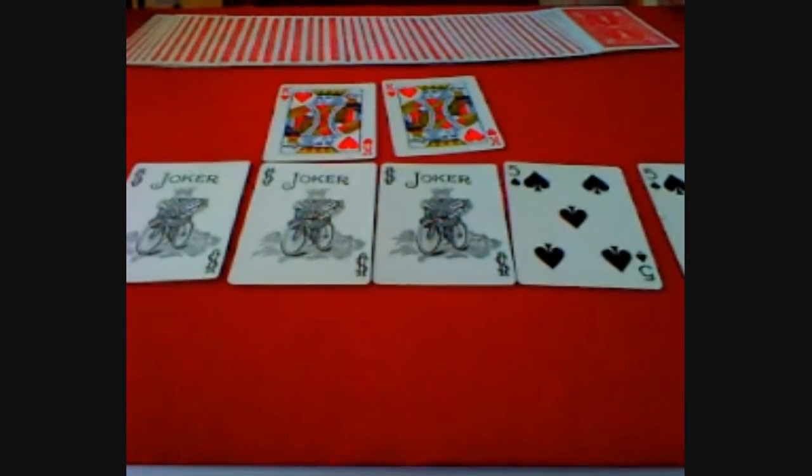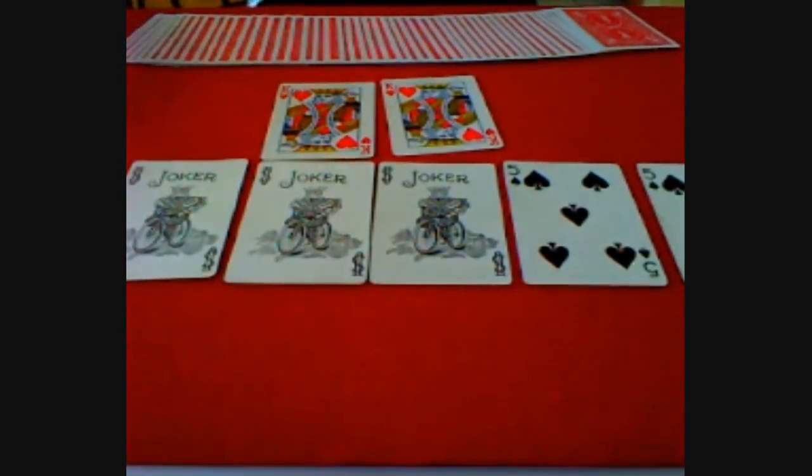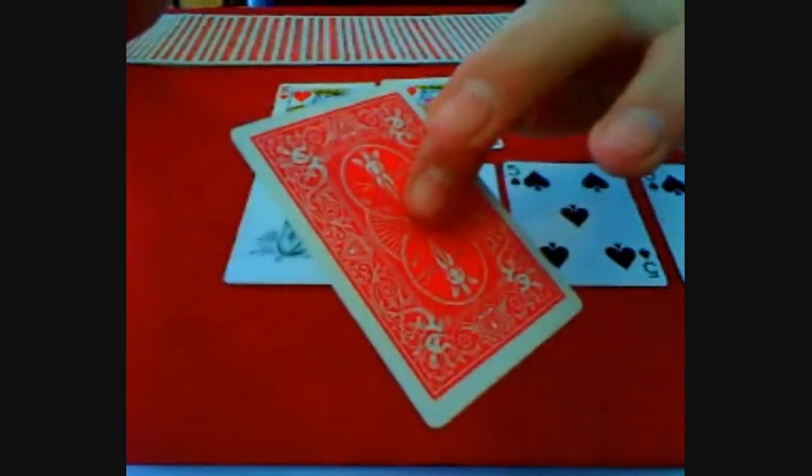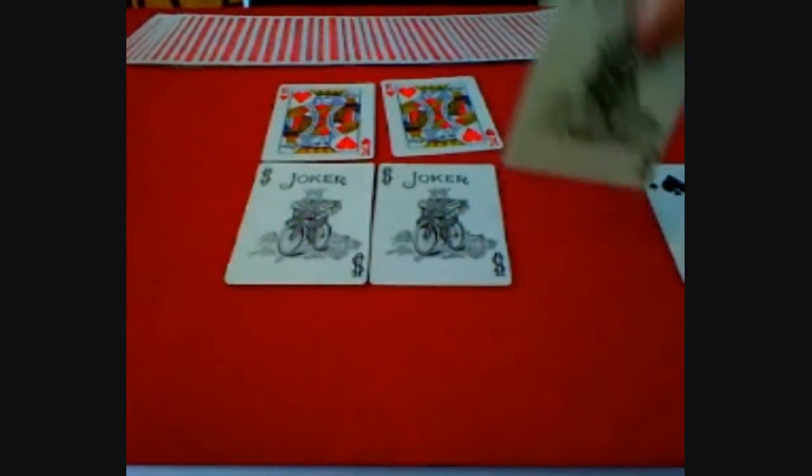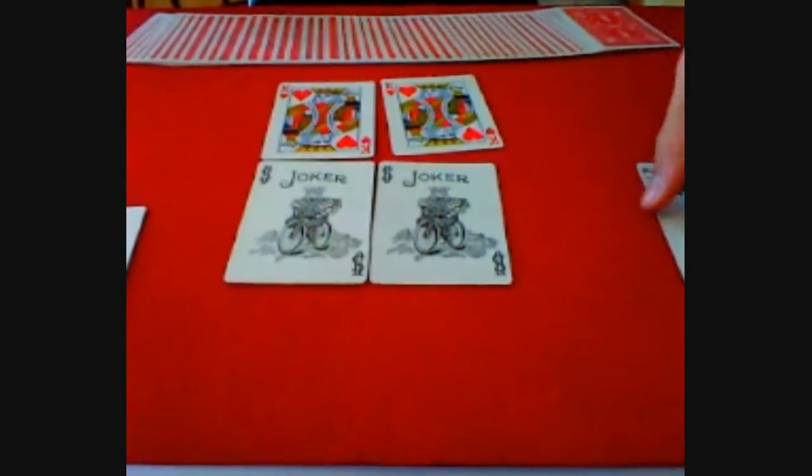All right. So you have your double stick tape. You put those together. Also, you're going to put a piece of double stick tape on the back of one of your jokers. Right now, I have double stick tape on the back of this, as you can see. Okay. Put that off to the side. Also, put your five off to the side. We'll get back to those cards in a moment.